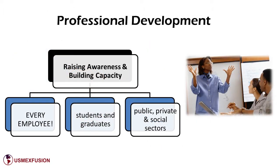Professional development. As we mentioned, in the process of institutional internationalization, it is imperative to continuously raise awareness and offer professional development training to all members of the institution. This means every employee, including the president, deans, coordinators, faculty, staff, students, and graduates. And again, it is also of key importance to include local and regional stakeholders from the public, private, and social sectors, and to offer them professional development training in CI as well.